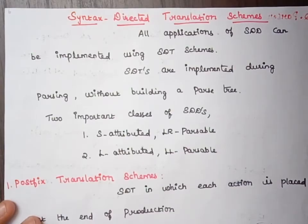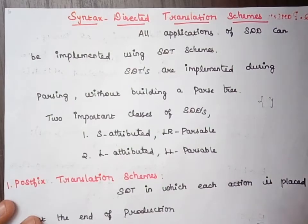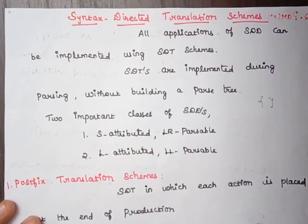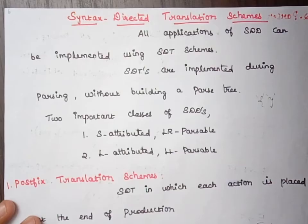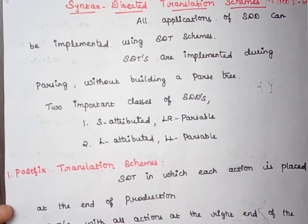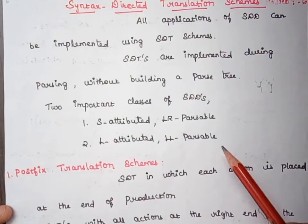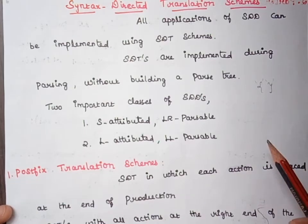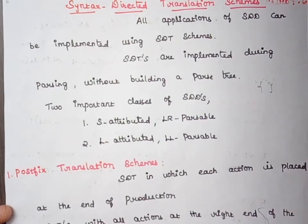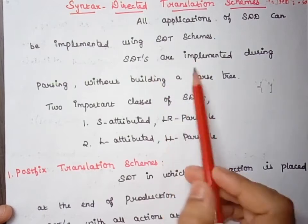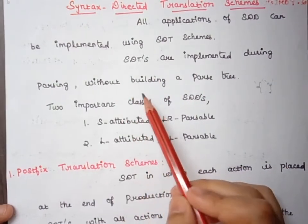To represent a semantic action, we use curly braces placed around the actions. If braces are already present as a grammar symbol, we will code those braces to indicate it is a semantic action. This SDT can be implemented by first building a parse tree and then performing the actions in a left-to-right depth-first order, which is also called pre-order traversal. Typically, SDTs are implemented during parsing without building a parse tree.